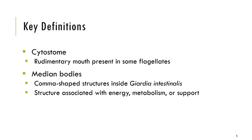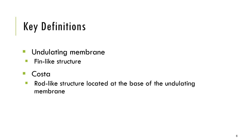Median bodies are comma-shaped structures found in the cytoplasm of Giardia intestinalis, also known as Giardia lamblia. Median bodies are described as structures associated with energy metabolism and support. However, the exact function of median bodies remains unclear. Undulating membrane is a fin-like structure that also helps selected flagellates with locomotion. An example of a flagellated parasite with an undulating membrane is Trichomonas.